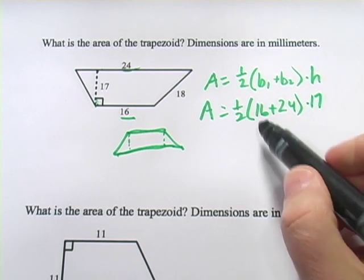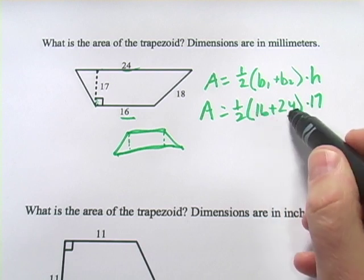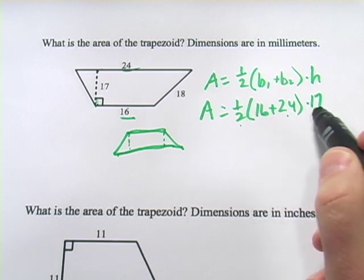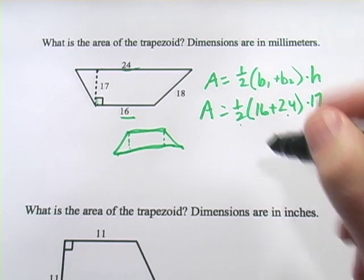So, when I plug this into my calculator, I'm probably going to punch in 16 plus 24, divide that by 2 after I hit the equal sign, and then multiply that by 17. If you do all that, you should get 340.